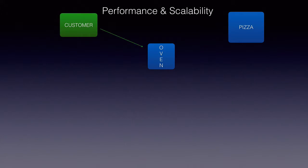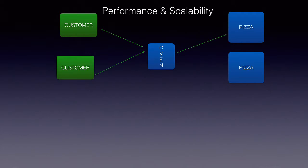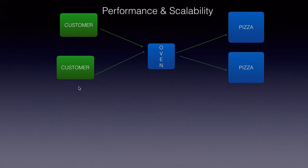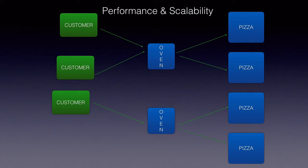Let's start with a real life example. Let's say you own a pizza baking or pizza making business. Performance for you is about having a super oven that can bake pizzas quickly for your customers. On the other hand, scalability is about delivering the pizzas even when the number of customers goes up.